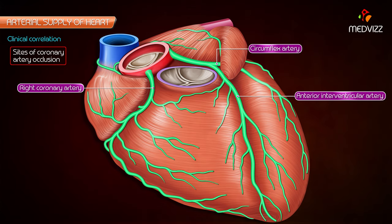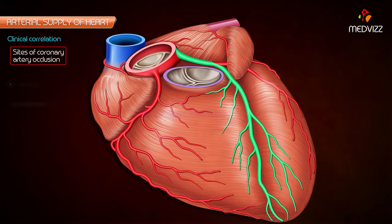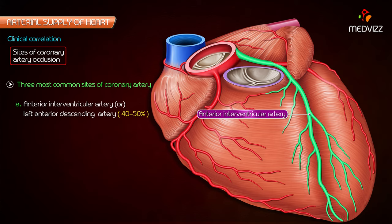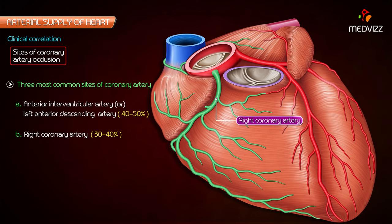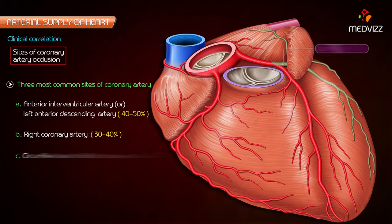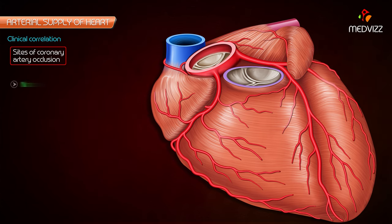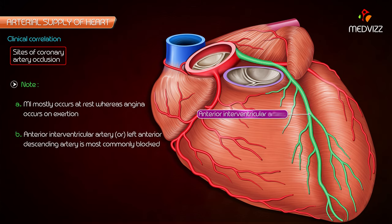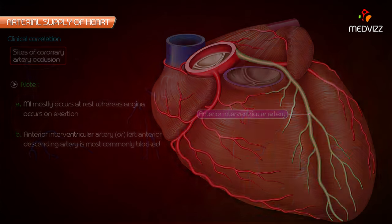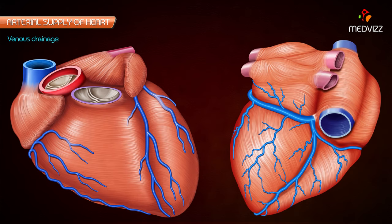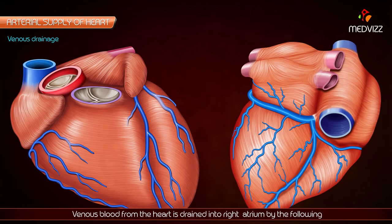Sites of coronary artery occlusion: the three most common sites are the anterior interventricular artery (left anterior descending artery) at 40 to 50 percent, the right coronary artery at 30 to 40 percent, and the circumflex branch of the left coronary artery at 15 to 20 percent. An important point: myocardial infarction mostly occurs at rest, whereas angina occurs on exertion. The anterior interventricular artery is most commonly blocked.